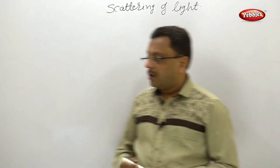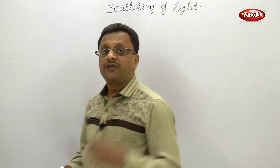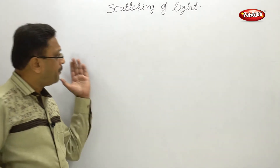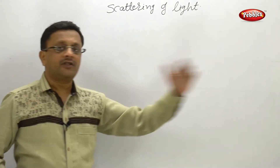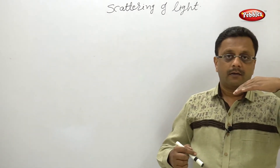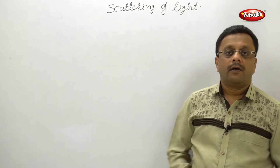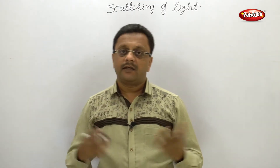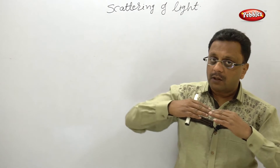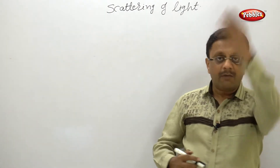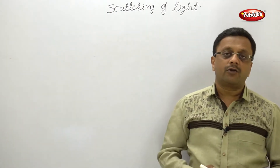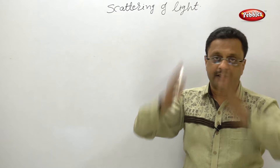For example, when you incident a parallel beam of light on a plain polished surface like a mirror, the incident ray and the reflected ray make the same angle for each ray of light. So the reflected beam of light is also made of parallel rays.